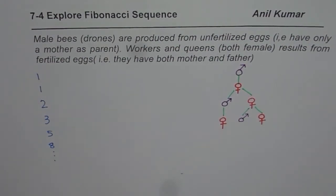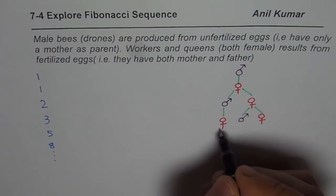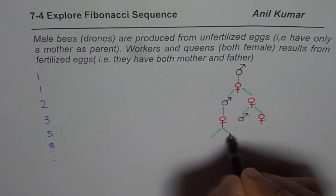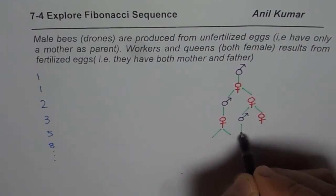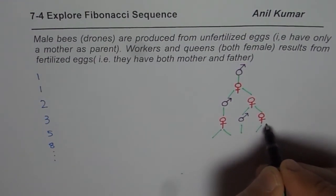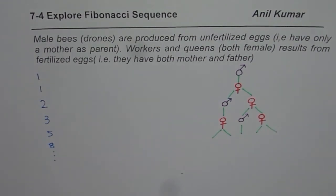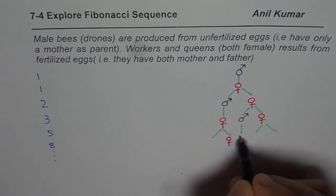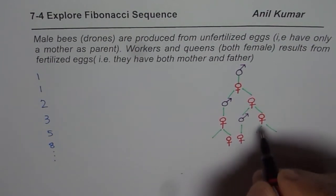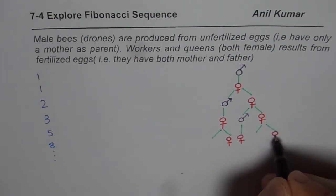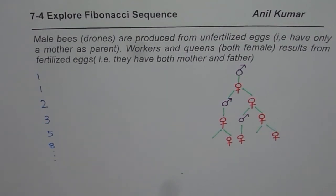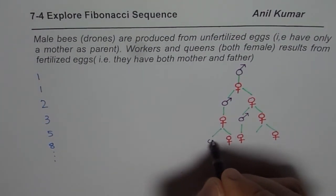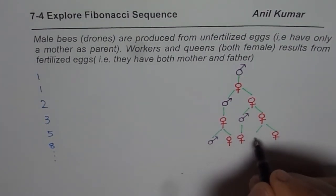Let's continue one more cycle. The female queen will have both parents as she comes from fertilized eggs. The male will have one parent, and this female will also have two — both male and female parents. So we can show this as two, and that's one. And this one here — now we have a drone with both parents.